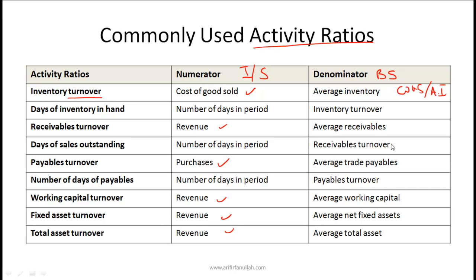An important point is that balance sheet numbers are generally taken as averages. Inventory is a snapshot taken on a given day, so if we are looking at the inventory turnover ratio for 2010, we look at cost of goods sold for 2010 and divide by average inventory for 2010. If you have an annual report with numbers for 31st December 2010 and 31st December 2009, you simply take the average of those two numbers.